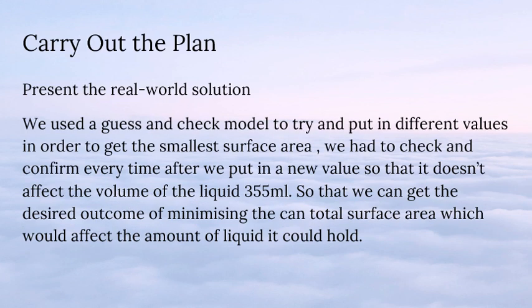I'm Wei Hung. So let's present the real-world solution. We used the guess and check model to try different values in order to get the smaller surface area. We checked and confirmed every time after putting in a new value so that it doesn't affect the volume of the liquid, which is 355ml, so that we can get the desired outcome of minimizing the can's total surface area.